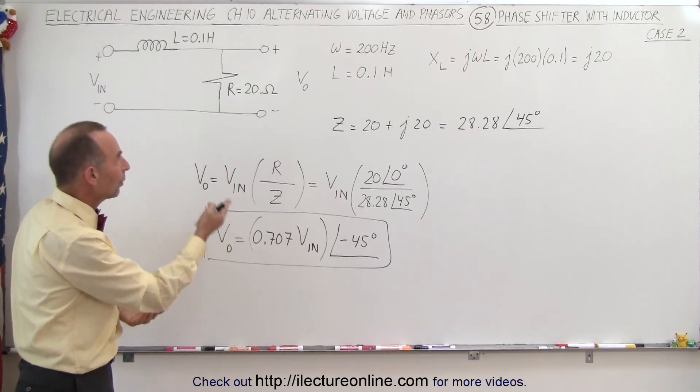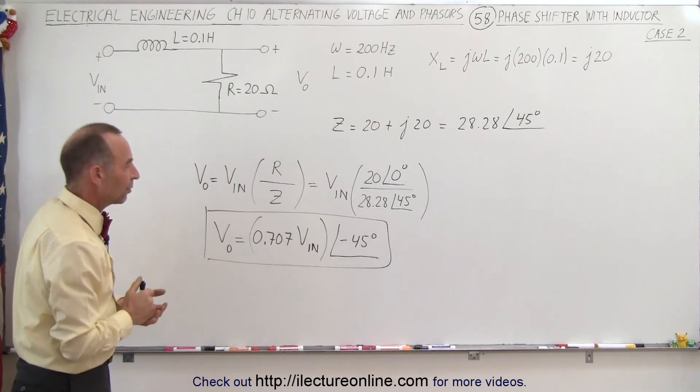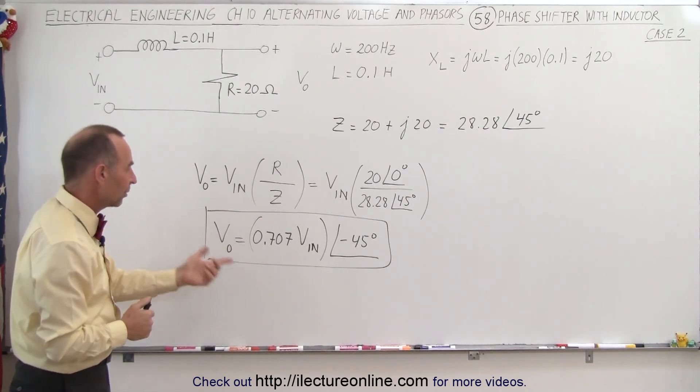So here we can create, with an inductor, a phase difference of minus 45 degrees on the output voltage compared to the input voltage.